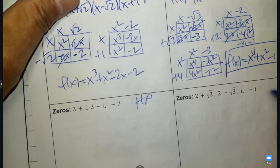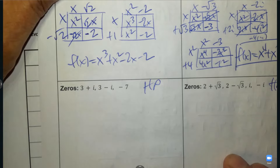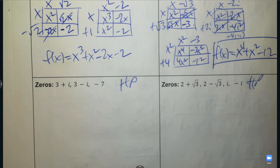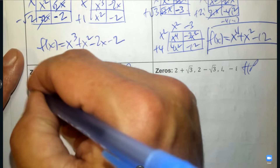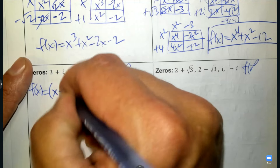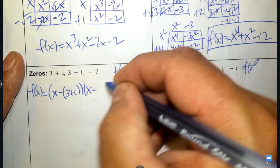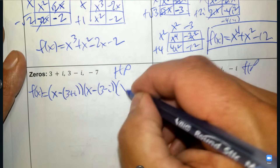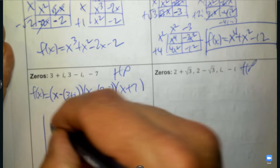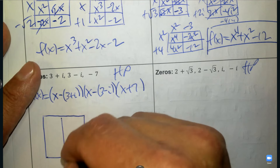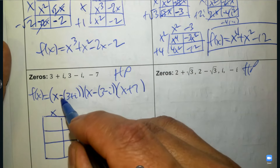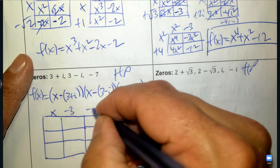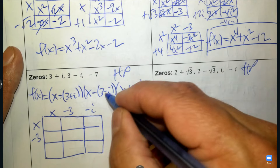These last two are for my HP friends. If you're in CP, you've finished the study guide — bring it to class because you get to use it on your exam. Honors does not get to use this on the exam, but you get to study from it. We're going to write x subtract the zero in parentheses, x subtract the conjugate in parentheses, and x plus 7. Distributing the negative gives negative 3 and negative i, and negative 3 with positive i.